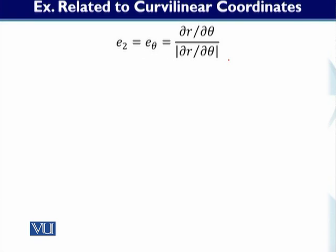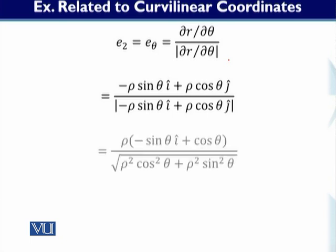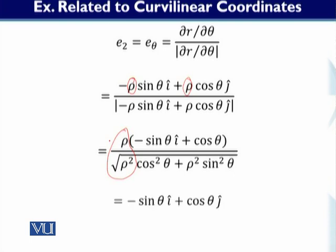Now we move on to E2 = E_theta. E_theta equals partial r over partial theta divided by its magnitude. Partial r over partial theta was minus rho sin(theta) i + rho cos(theta) j. Dividing by the magnitude, the rho cancels out, and we get E2 = minus sin(theta) i + cos(theta) j.